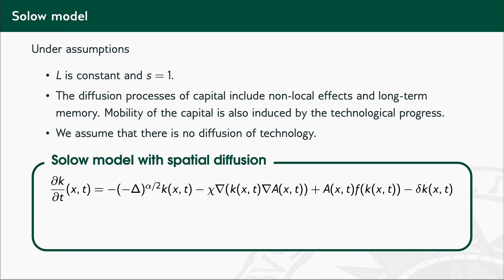Having this in mind, we arrive at the following system of partial differential equations: a parabolic partial differential equation, where the first term is the temporal derivative of lower k — the per capita capital — representing the temporal evolution of the variable. The second term, represented by the fractional Laplacian operator, represents the non-local effect of anomalous diffusion. The third term, the cross-diffusion term, represents the ability of capital k to move towards regions with higher technological progress. The fourth term represents the production of per capita capital, and the last term represents depreciation.